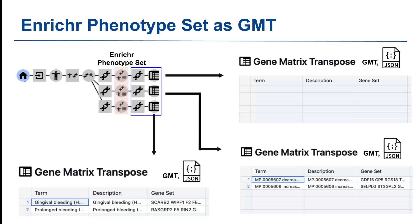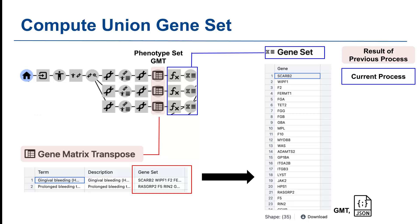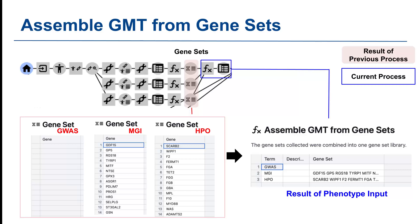There will be three tables for each database. The Playbook workflow converts the list of phenotype sets into GMT format, including descriptions and gene sets for each set. After creating the GMT file, you can download it in either JSON or GMT format by clicking the download button. From the GMT file, we extract the gene sets, resulting in three sets of genes for each database: GWAS, MGI Mammalians, and Human Phenotype Ontology. Once extracted, the Playbook workflow assembles them as a new single GMT file containing the gene sets for all three phenotype databases.